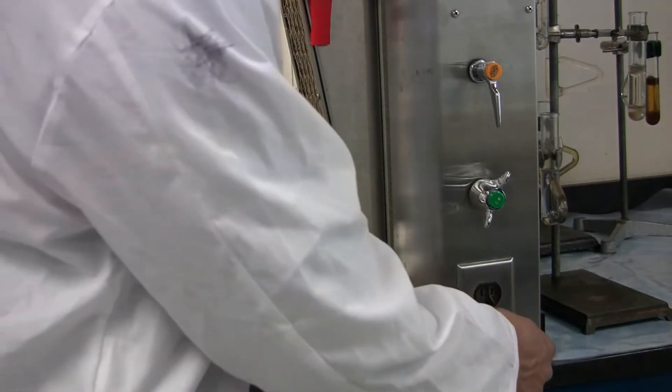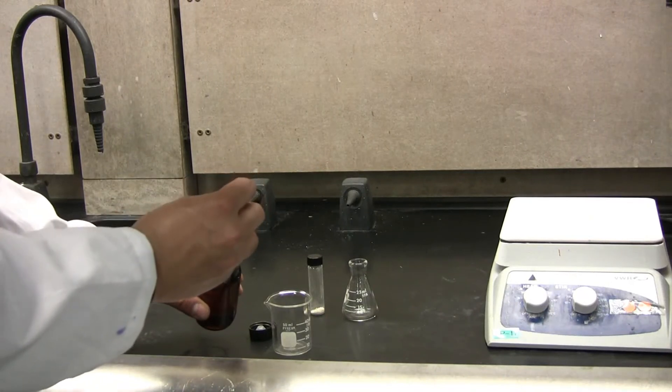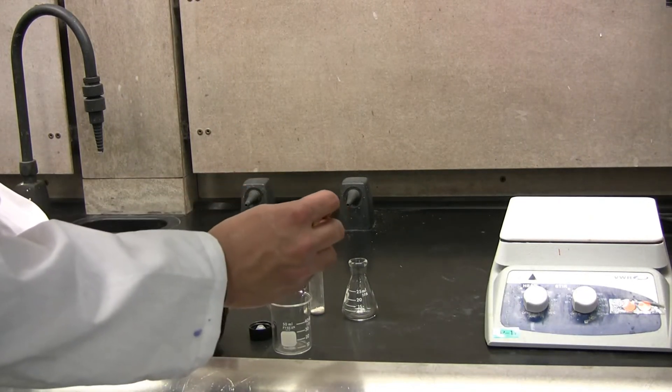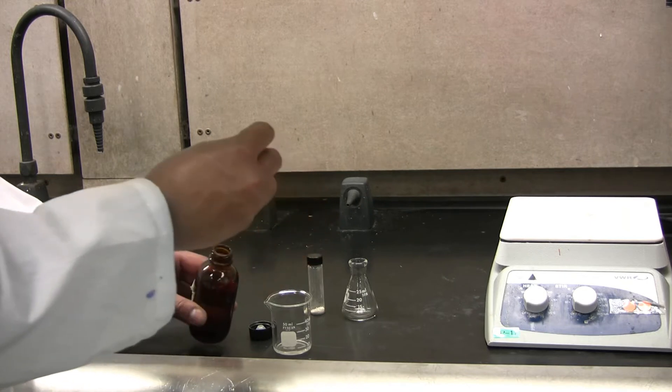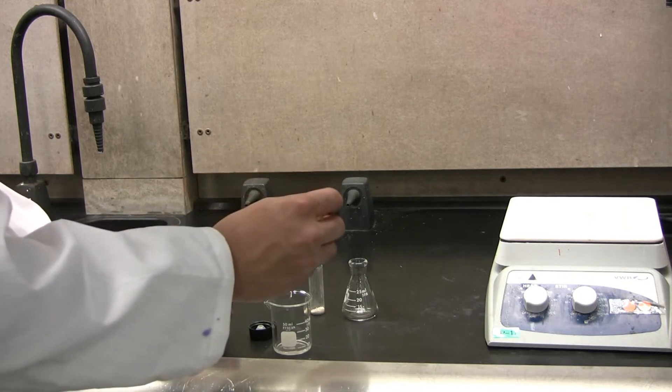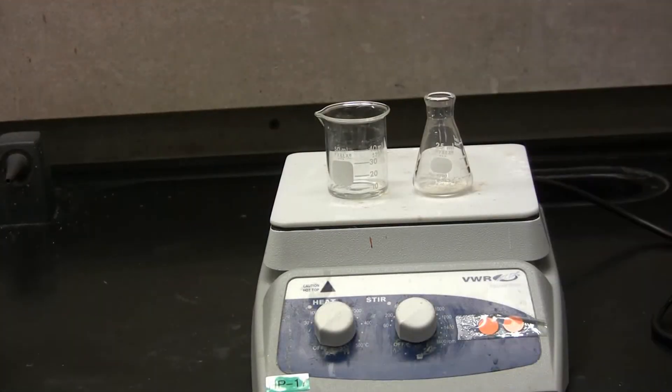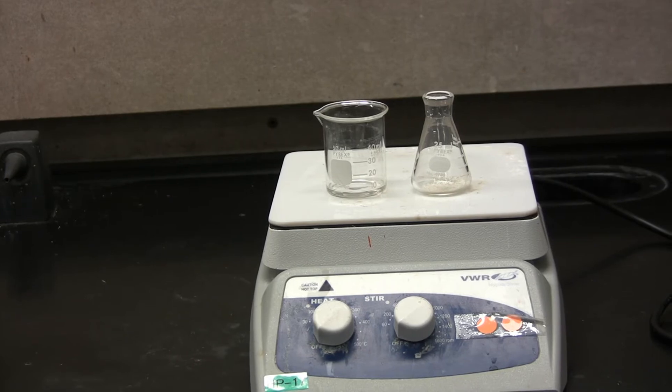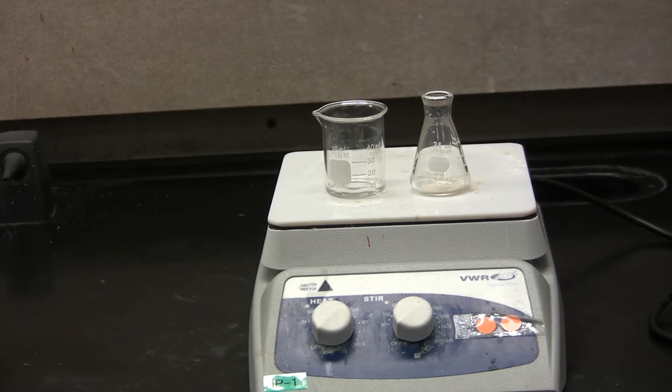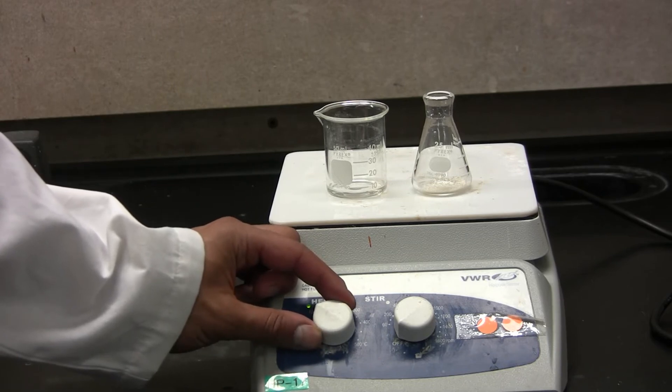Plug in the Hotplate. Now you want to Pipette some of your Solvent into the Beaker. Place the Solvent Beaker and Erlenmeyer Flask containing the Crystals onto the Hotplate. Now turn up the Heat to just below the Boiling Point of the Solvent.